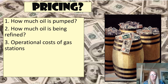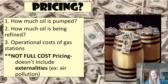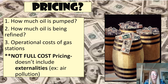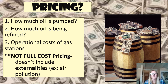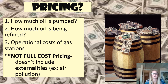Gas stations make a living, so they obviously have operational costs and charge a fee on top of the price of gasoline. Keep in mind that the price you pay at a gas station doesn't account for what are called externalities — items not included in the price of what you're buying. For example, air pollution obviously causes asthma and other associated lung problems, and all of those costs incurred by the person with asthma are not included in the price of gas.